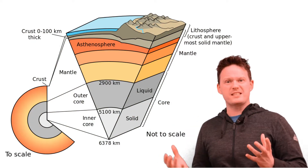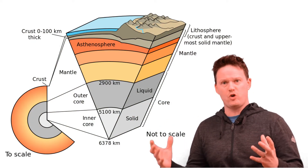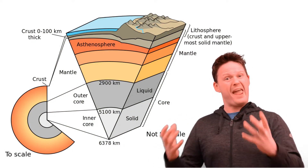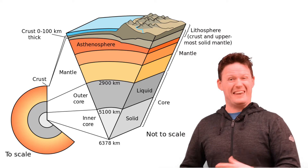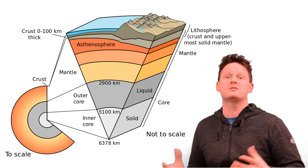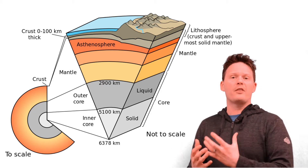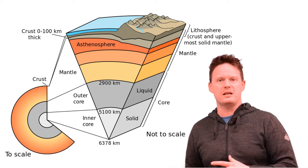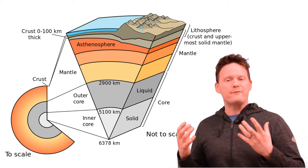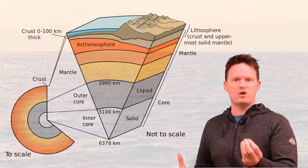Finally, like our apple, our earth has a skin — we call that skin the crust. Like the skin of an apple, it's quite thin. In some places it's zero kilometers in thickness, meaning it's open, and in other areas it can be up to 80 kilometers in thickness. We have two types of crust: oceanic crust and continental crust.